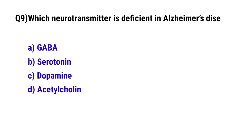Question No. 9: Which neurotransmitter is deficient in Alzheimer's disease? The correct option is D: Acetylcholine.